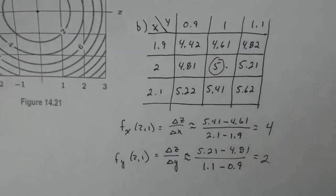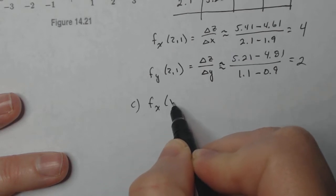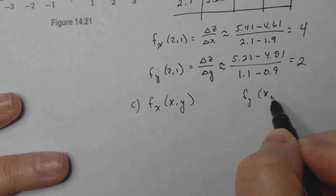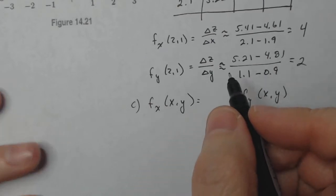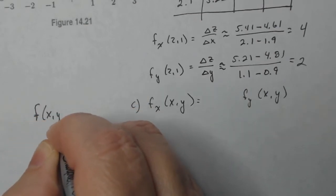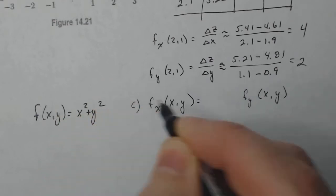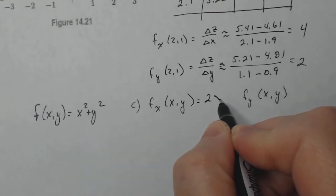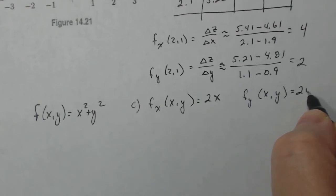So the last part says now do the exact values. So that means that I have to have f sub x at x,y, then f sub y at x,y, and then I plug in the ordered pair two one. So my original f of x,y was given as x squared plus y squared. So if I want to do f sub x, I treat y as a constant. So that's going to give me two x. For f sub y, I treat x as a constant. So that's going to give me two y.